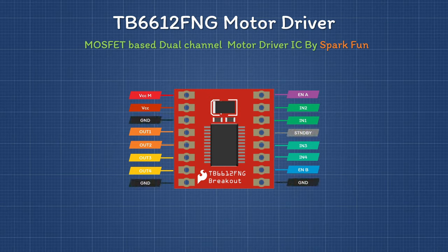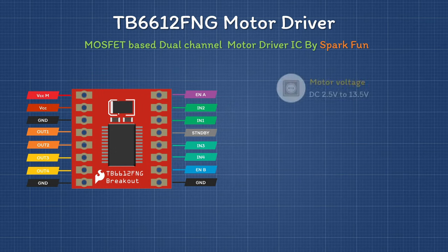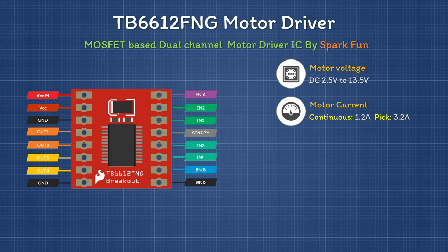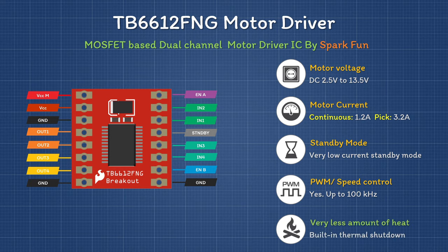The TB6612FNG has a power saver standby mode during idle conditions, which helps save lots of power. Key specifications: recommended motor voltage is 4.5 to 15 volts, but it can operate down to 2.5 volts with derated performance. Each channel handles 1.2 amps continuously and 3 amps at peak. It supports PWM signals up to 100 kHz to control motor speed, produces very little heat, and includes a built-in thermal shutdown feature.